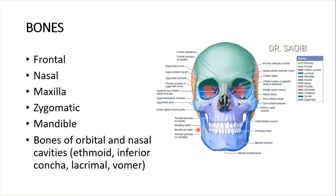Various bones are involved in the formation of the Norma Frontalis. First of all, this is the frontal bone. Then these are the nasal bones in green — frontal and nasal. Then are the maxilla, on both sides. This maxilla and one maxilla here, and then the zygomatic bones. These are the zygomatic bones, and then this is the mandible.